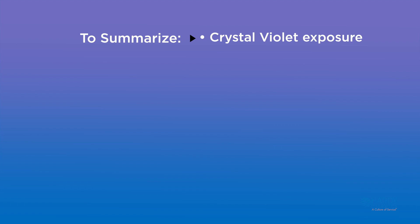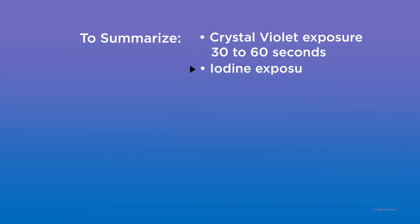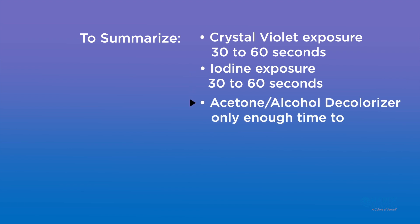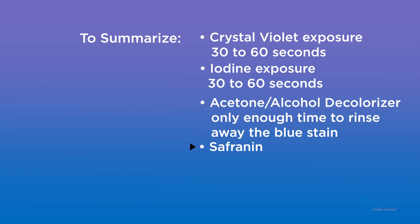To summarize the staining times: crystal violet exposure, 30 to 60 seconds; iodine exposure, 30 to 60 seconds; acetone-alcohol decolorizer, only enough time to rinse away the blue stain; safranin exposure, 30 to 60 seconds.